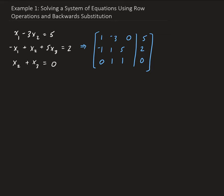We can go ahead and apply the row operations to solve the system. When we're using row operations, we want to first put this into upper triangular form. So we want to make this position 0, and this one 0 as well — we do that by using the row operations.